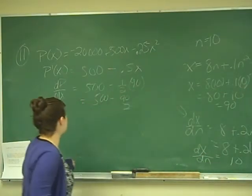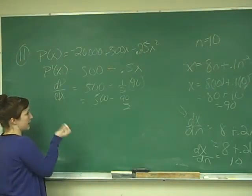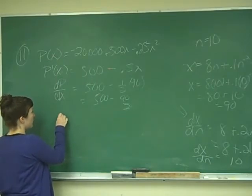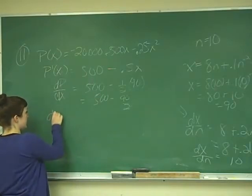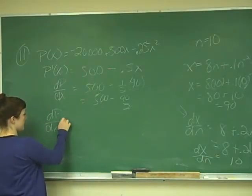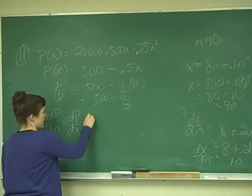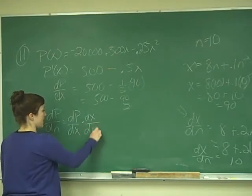And we know that dp over dx is equal to 500 minus 90 over 2. So dp over dx times dx over dn.